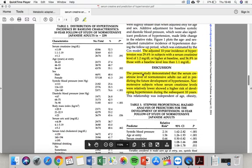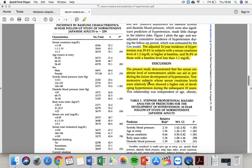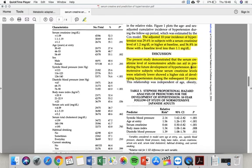The present study demonstrated that the serum creatinine level of normotensive adults can aid in predicting the future development of hypertension. Normotensive subjects with serum creatinine levels that were relatively lower showed a higher risk of developing hypertension during the subsequent 10 years. Lower level of creatinine, higher incidence of hypertension.